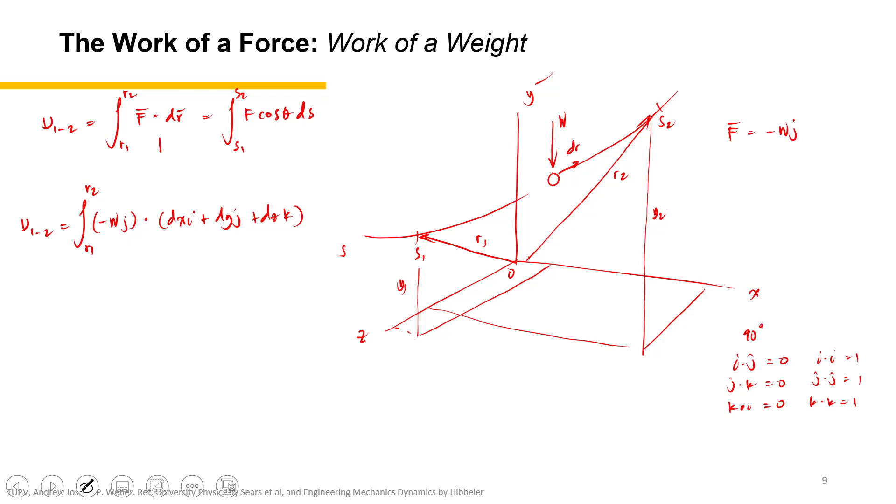Because here the angle is 90 degrees, here the angle is zero. Cosine 90 is equal to zero, but cosine zero is equal to one. So what is left now is just j and j, and that would be negative W dy. So let's change the limit into y—that would be y sub 1 to y sub 2.